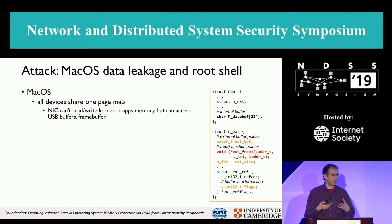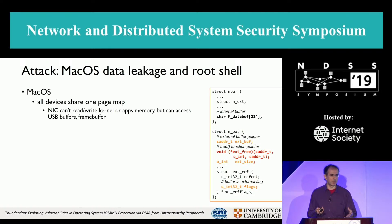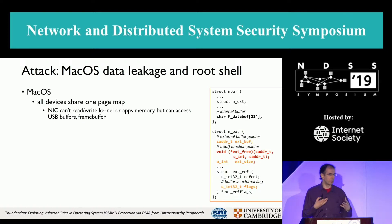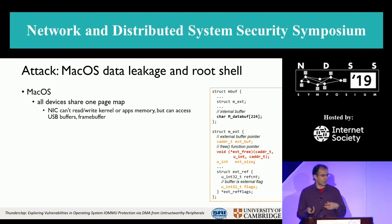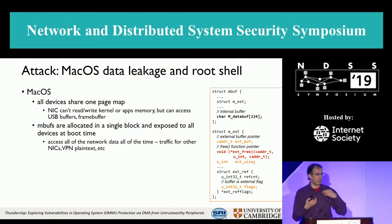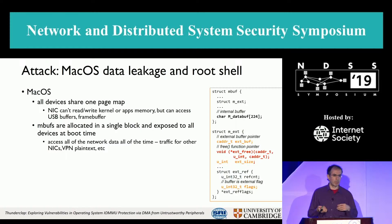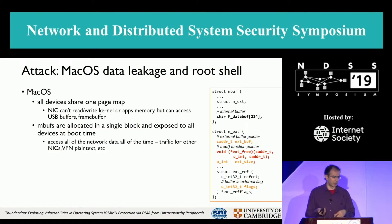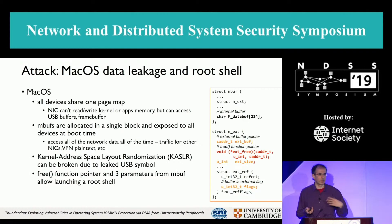On MacOS, all devices share a single page map, which means that while the network card can't read and write kernel or application memory directly, it can access things like USB buffers — key logging — and can actually read the frame buffer. The mbuf structure is allocated as a single block at boot and exposed to all devices, which means all peripherals can see all network traffic all of the time — things like traffic for other network cards, plain text for VPNs, and so on.